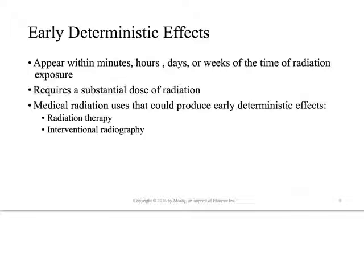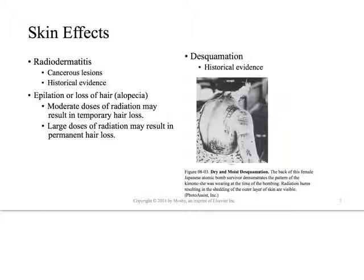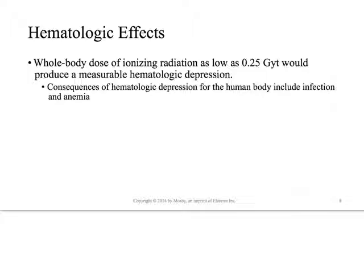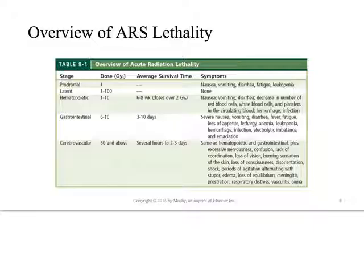Early effects are things that happen within hours, minutes, days, sometimes weeks of the exposure. They require a substantial amount of radiation, and the only modalities identified as potentially causing them are radiation therapy and interventional radiography - we should not even see these in nuclear medicine. These include skin effects. Here is documentation from Hiroshima of moist desquamation, burns, damage, and permanent hair loss. Hematologic effects are another early effect - whole-body irradiation doses as low as 0.25 gray in tissue could produce hematologic depression, particularly of leukocytes and some erythrocytes.